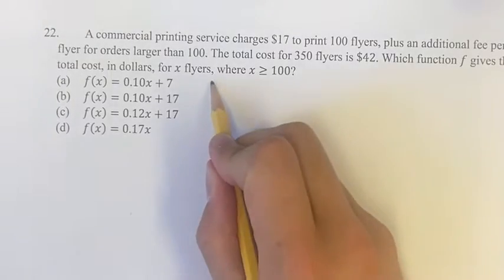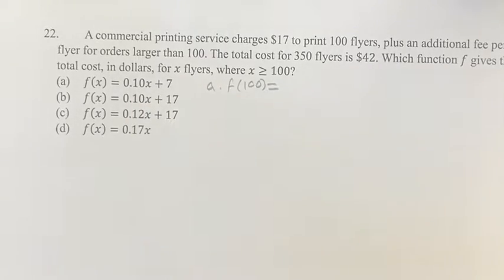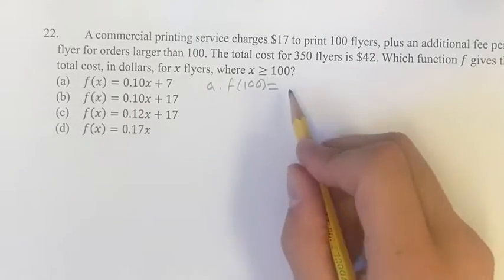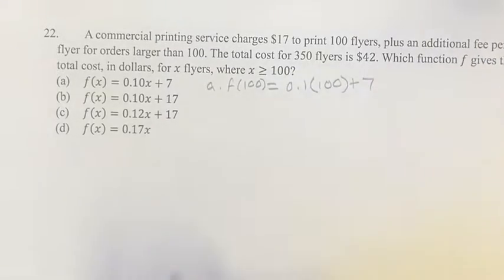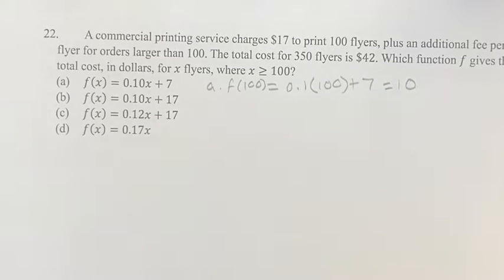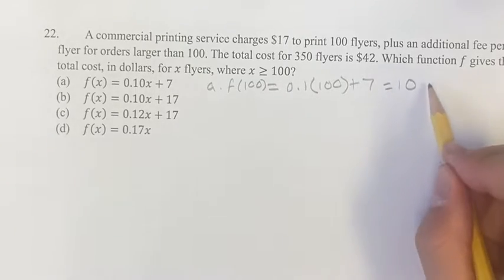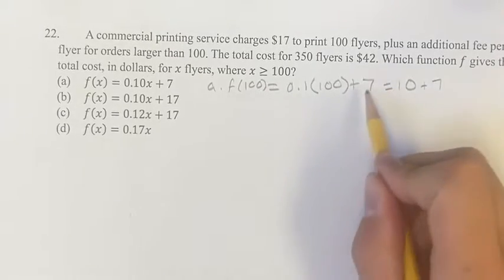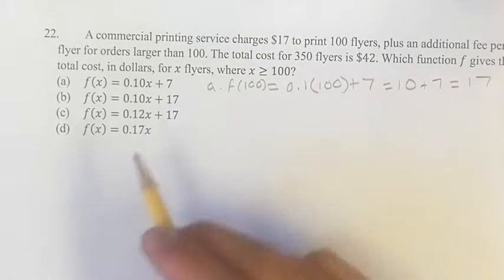For option A, f(100), we plug in 100 wherever we see x. It is 0.1 times 100 plus 7. 0.1 times 100 is 10. Some of these you might need a calculator for, but 0.1 times 100 is 10. 10 plus 7 equals 17, which is what we're looking for. So A is still in the mix.